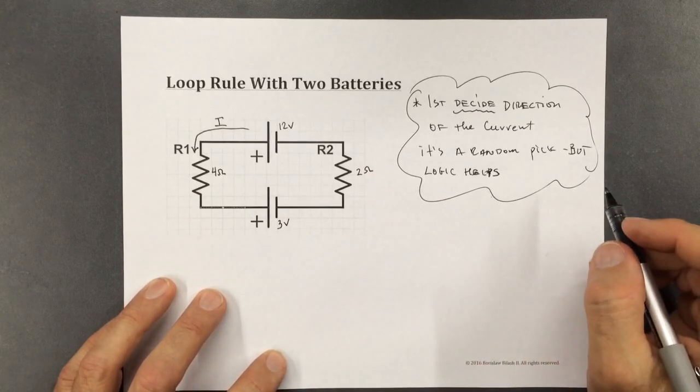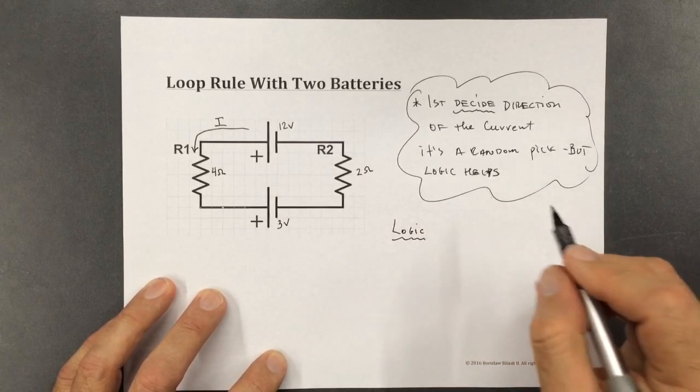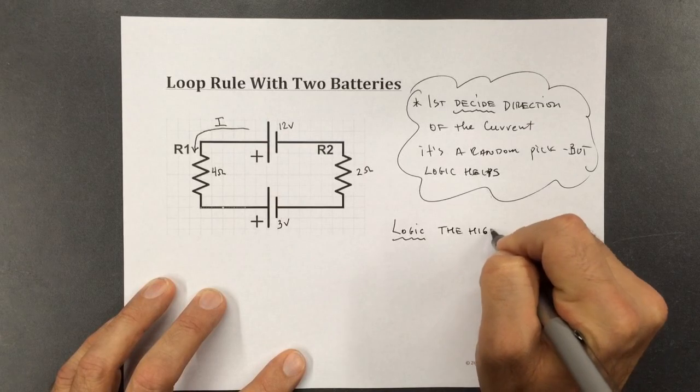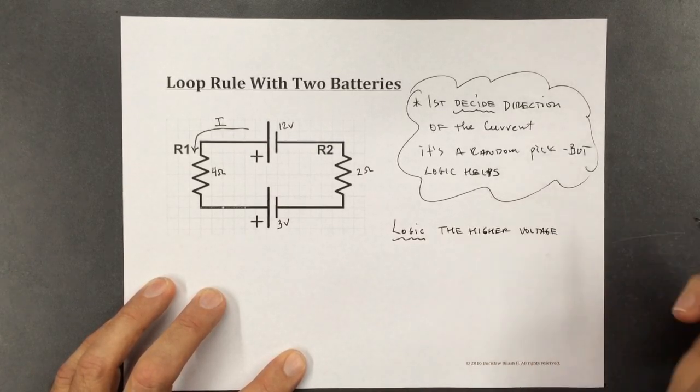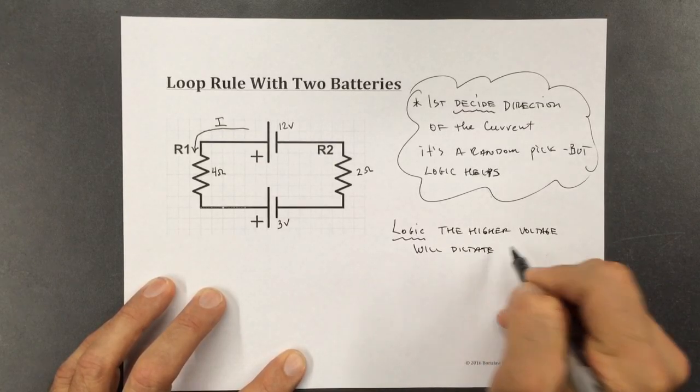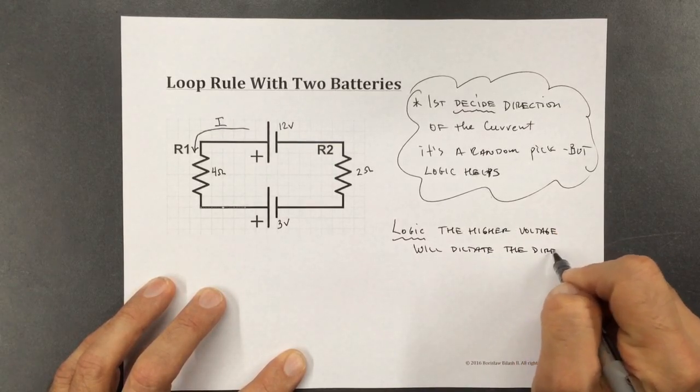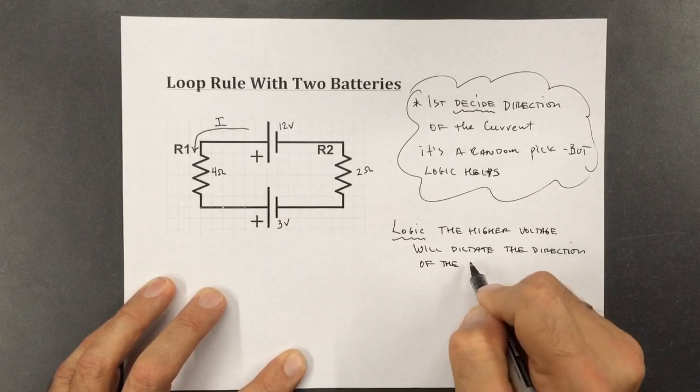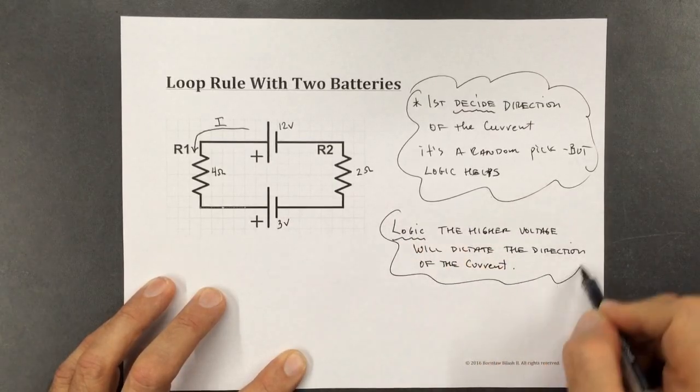Okay, so the logic. Let's just summarize that. The higher voltage will dictate the direction of the current. Okay, that's the logic we're going to be using.